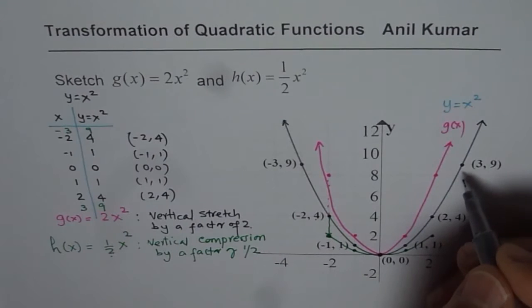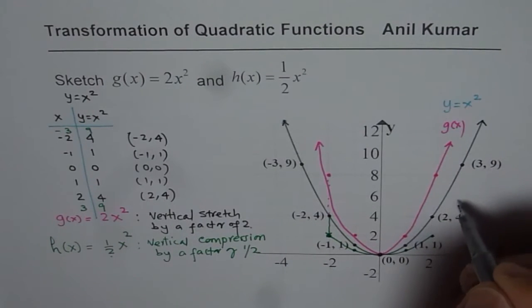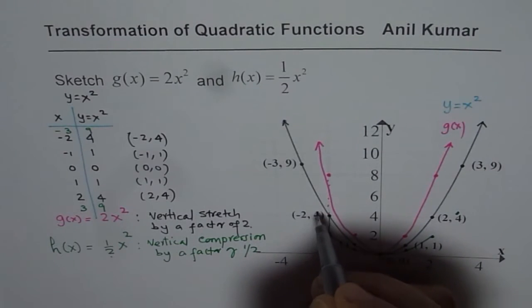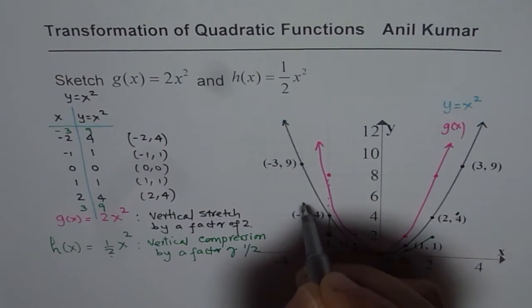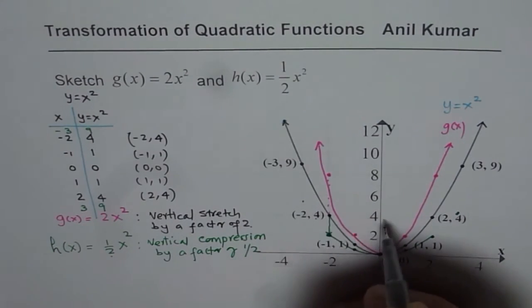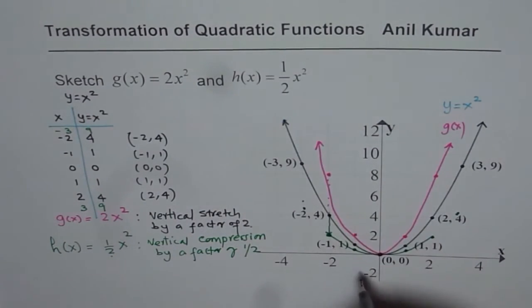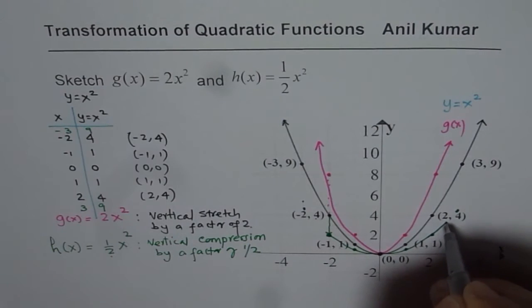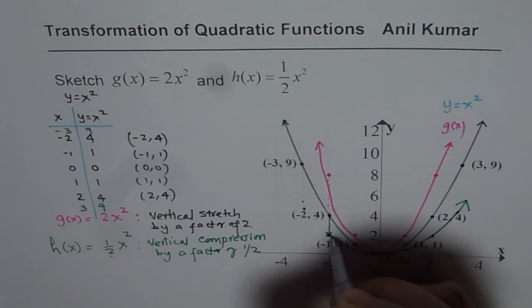Half of 9 is 4.5. So it is like 4.5 is somewhere there. And that is 3, 4.5. So we will bring this to 4.5. So that is somewhere here. So you could extend this towards that point. Mark arrows.